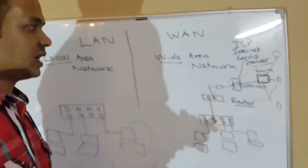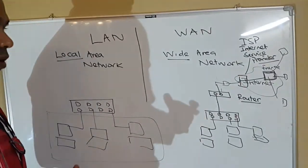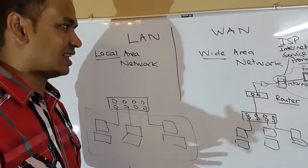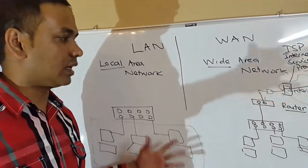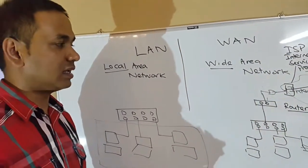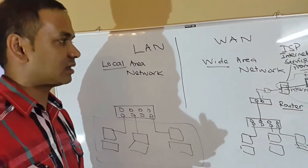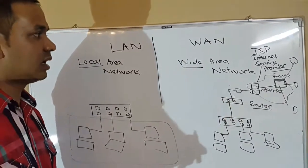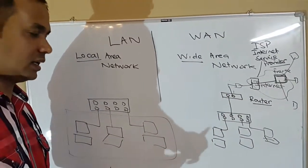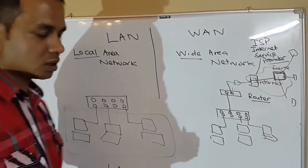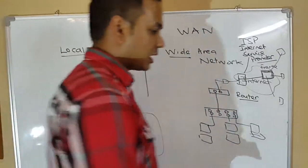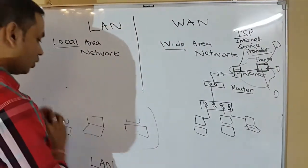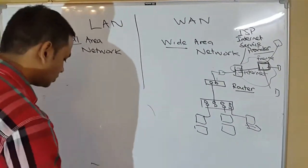To understand the concept of WAN, you just need to understand that it's a broad network covering different countries and different cities. That is a wide area network. Now I am going to explain the different types of networking devices.